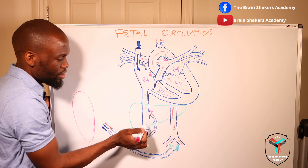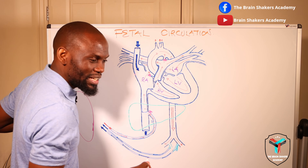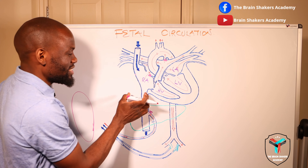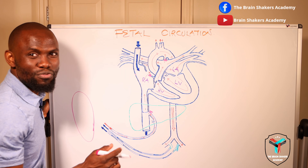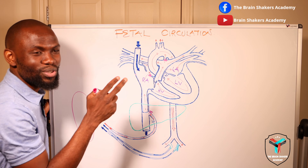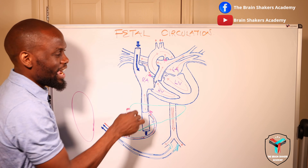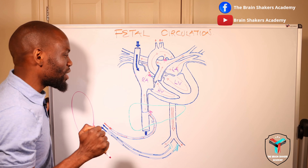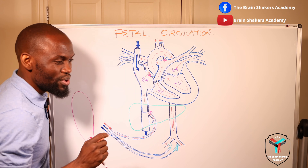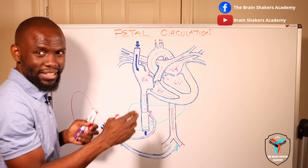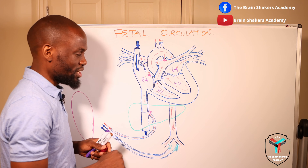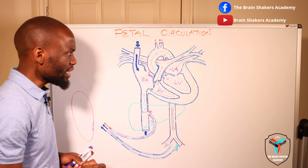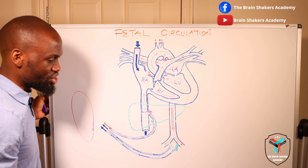So as blood flows through the inferior vena cava we have both deoxygenated blood from the lower portion of the body and oxygenated blood coming in. This is where it gets interesting because the blood flowing through the inferior vena cava is going to flow in two pathways. When it gets through to the right atrium, separation occurs because within the right atrium you have important structures — a number of valves that play a key role in separating oxygenated and deoxygenated blood. Of particular importance to the fetal circulation is a valve we call the eustachian valve.